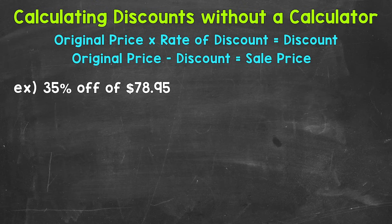The first thing we need to do is calculate the discount — how much money will be taken off the original price. We do this by multiplying the original price by the rate of discount. The rate of discount is in the form of a percent, so we need to convert that percent to decimal form. Percent means per 100, so we divide our percent by 100 to convert it to a decimal. We can do this by simply moving the decimal twice to the left.